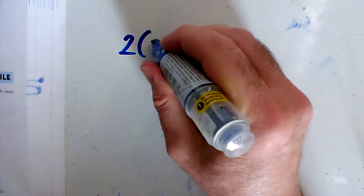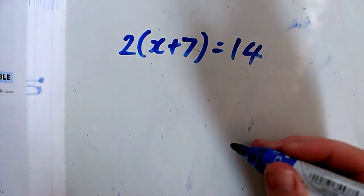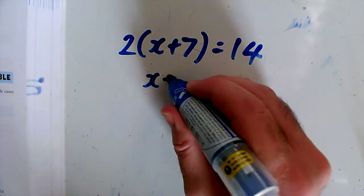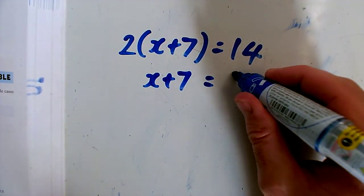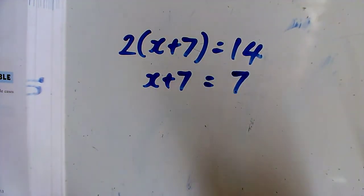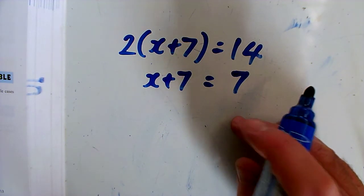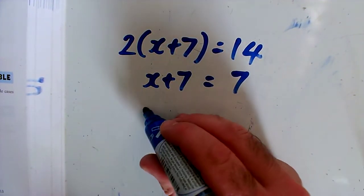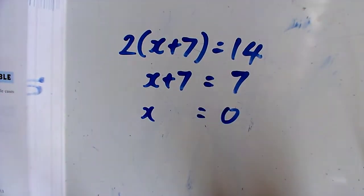Question L: 2 brackets x plus 7 equals 14. I'm going to get x plus 7 on its own by dividing by 2, and divide the other side by 2 as well. So x plus 7 equals 7. Taking away 7 from both sides gives x equals 0.